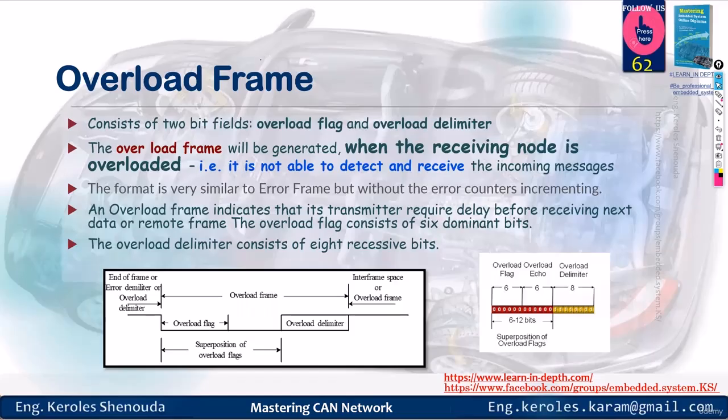Now let's discuss another type of frame called the overload frame. When does the overload frame appear? It shows up when the receiving node is overloaded. It keeps on receiving data, but the software hasn't read from its mailbox yet. So as a receiver, you continue to accept data from the ID within your range and it's accepted. You keep on receiving and storing it in the mailbox.